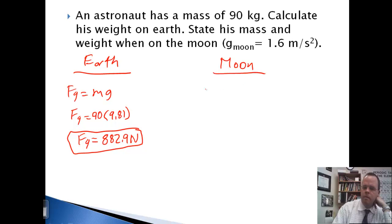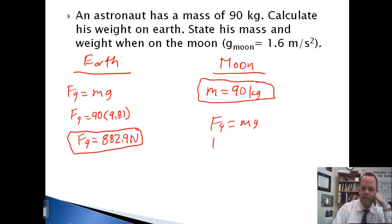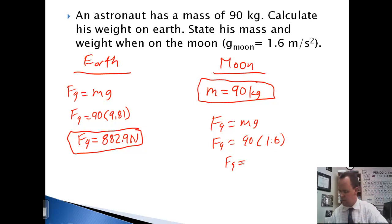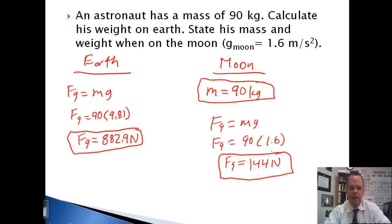On the Moon, mass does not change based on location. So his mass will still be 90 kilograms. His weight will be 90 times 1.6, which comes out to 144 newtons. So he went from 883 newtons down to 144 newtons by going to the Moon. A really complicated but really effective weight loss plan.